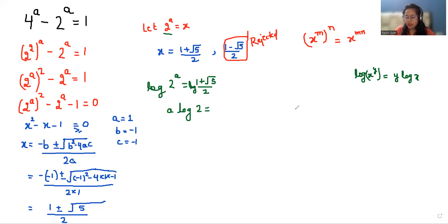And here we can use the property log(x/y) = log(x) - log(y). So we have log(1 + √5) - log(2).